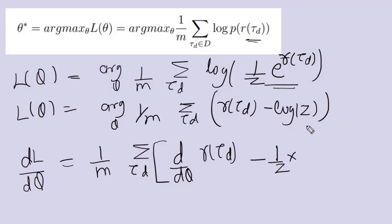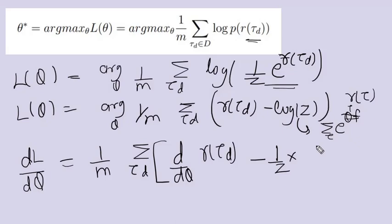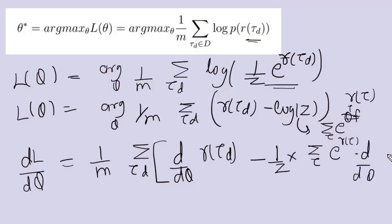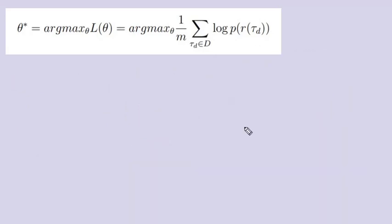Z can be defined as the summation over tau of e raised to theta transpose f, or simply e raised to r of tau — that is what the partition function was. When we take the derivative it will be sum over all tau of e raised to r of tau, and we apply the chain rule to get d by d theta of r of tau times e raised to r of tau.